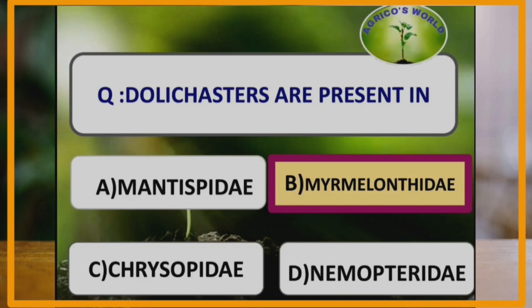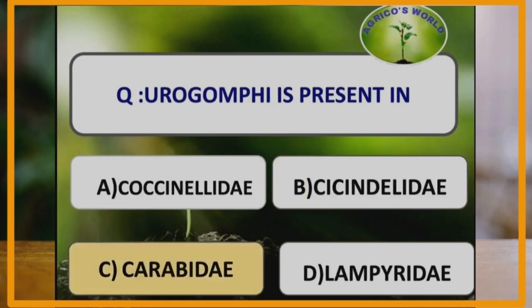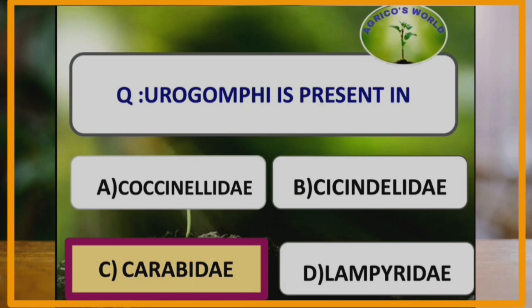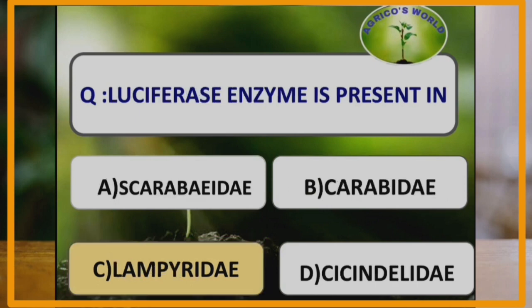Dolicasters are the lateral segmental processes fringed with setae. Urogomphi is present in the family Carabidae. In Carabidae, the terminal cercus-like structure is called urogomphi.